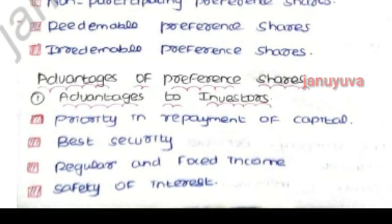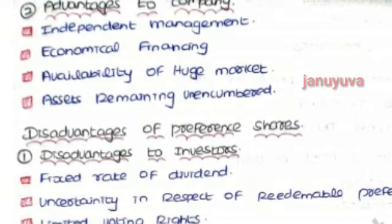Preference shareholders receive regular and fixed income, and there is safety of interest — the interest rate is reasonable and correct. Next, we have advantages to the company. The company has independent management; that is one unique advantage. Also, there is economical financing, where the financing fund is in the economical section. And there is availability of a huge market — if we need to collect enough funds, the market is large.